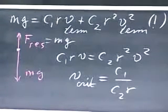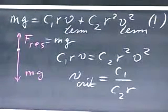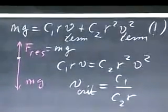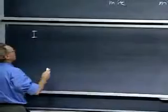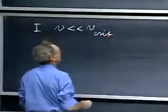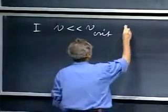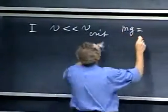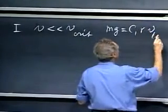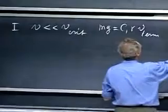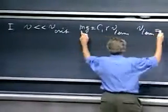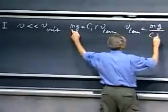Now we're going to make a clear distinction between the domains one and two, the regimes one and two. Regime one is when the speed is much, much less than the critical velocity. So we then have that mg equals c1 rv terminal, and therefore the terminal velocity equals mg divided by c1 r.